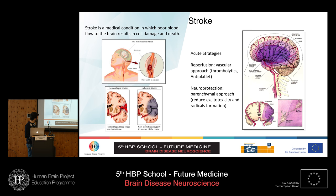After the acute phase of the stroke, there are two areas: the core area, in which the cell dies and nothing can be done, and the nearby penumbra area, in which the neurons are still alive — suffering, but still alive. All rehabilitative procedures and recovery treatments are focused on this penumbra area.